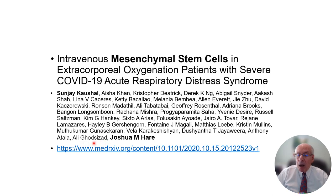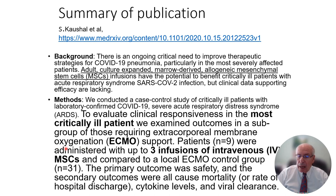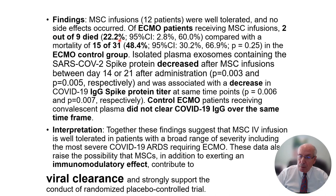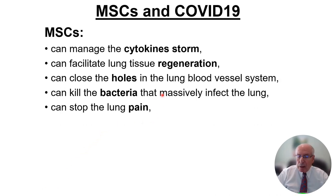Here's one publication by Joshua Ayer at the University of Miami and his group, in which they gave culture-expanded marrow-derived MSCs to very severely ill COVID-19 patients — all of them on ECMO. They were given three infusions of MSCs. Unfortunately two of those patients died, but the other patients did very well. They also assayed for IgG for the spike protein titer in the nasal passages of these patients, and within a couple of days all the spike protein was gone. In the results and discussion they couldn't imagine what contributed to the viral clearance — I'll show you.